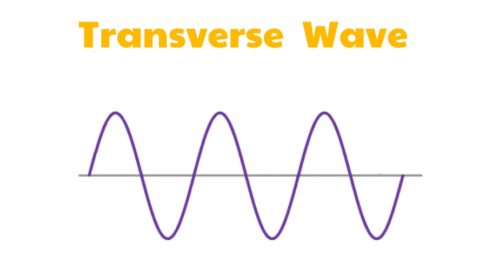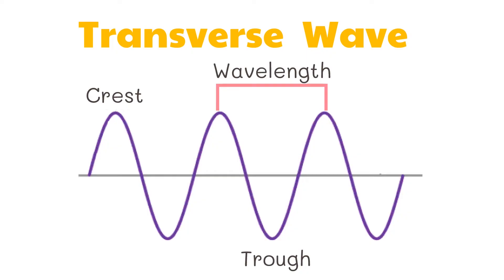In a transverse wave, the highest point is the crest, while the lowest point is the trough. The amplitude, same as in the longitudinal wave, is the maximum displacement of the particles of the medium from their equilibrium position. An example of a transverse wave is light.